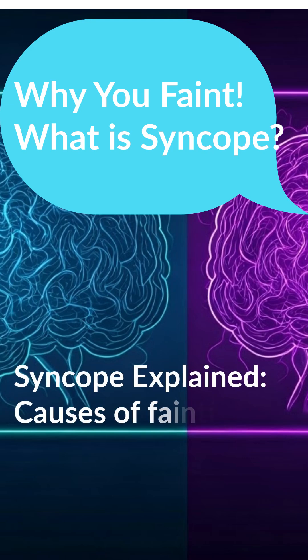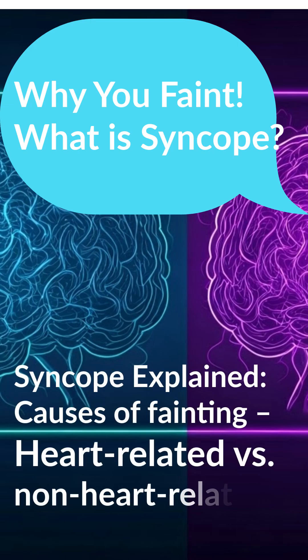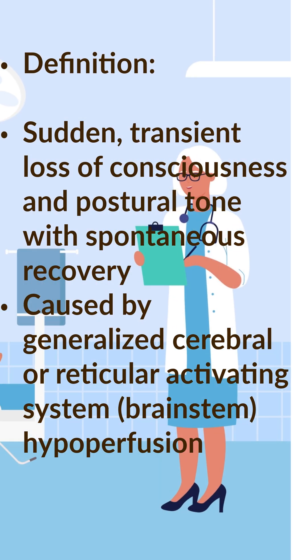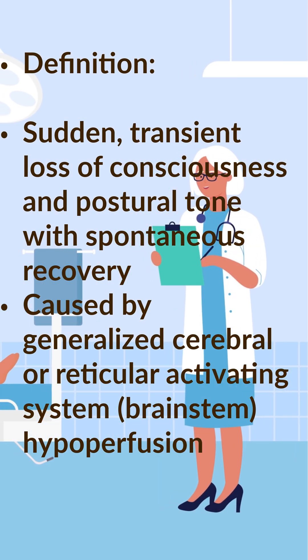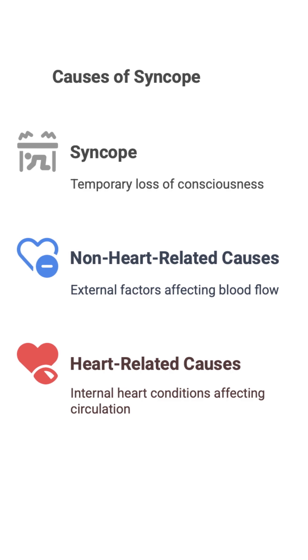Let's move on to syncope — that's fainting. There's a sudden temporary loss of consciousness and muscle tone from low blood flow to the brain, and then you recover on your own. Spontaneous recovery is key. The causes are divided into two main categories: heart-related and non-heart-related — cardiogenic and non-cardiogenic.